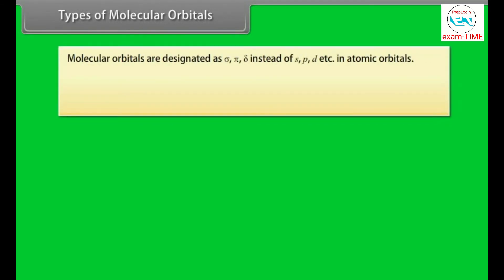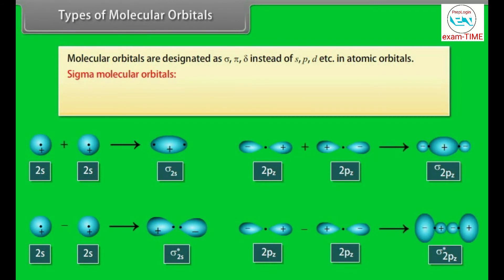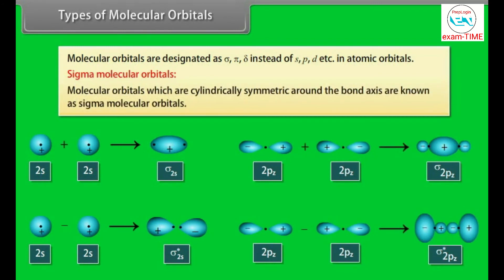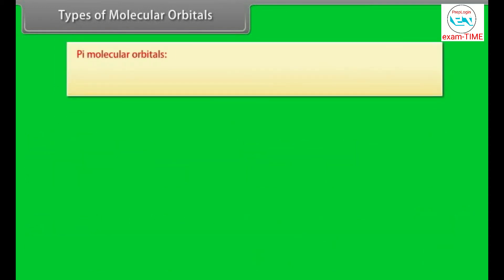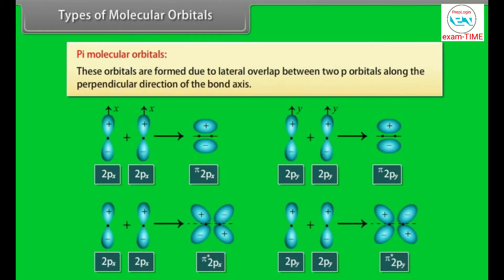Molecular orbitals are designated as sigma, pi, and delta instead of s, p, d as in atomic orbitals. Sigma molecular orbitals are cylindrically symmetric around the bond axis. Pi molecular orbitals are formed due to lateral overlap between two P orbitals along the perpendicular direction of the bond axis.